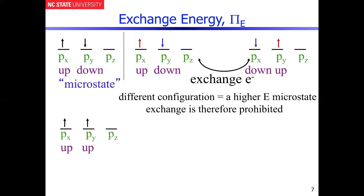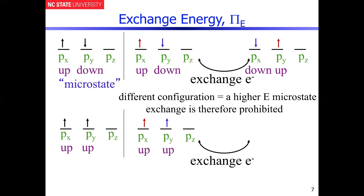But if you take the configuration in the other direction, where everything is spin up, and we distinguish the two electrons by color, what happens as a result of exchange? The red exchanges for blue and the blue exchanges for red, and you basically get a configuration which is, in all honesty, indistinguishable from the first one. That's the concept of exchange — the electrons can interchange between those orbitals, they're still both spin up, and that constitutes one Pi_e, because you can exchange one with the other. So there's one Pi_e for that configuration.